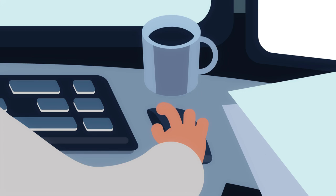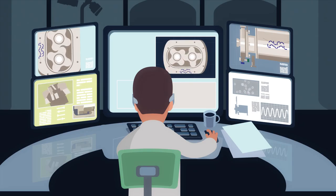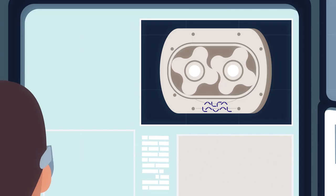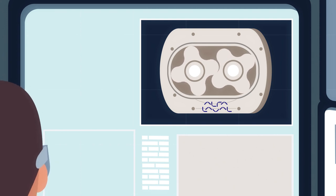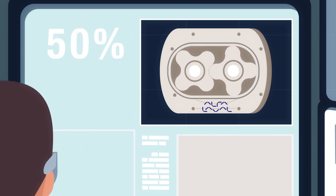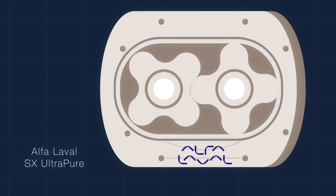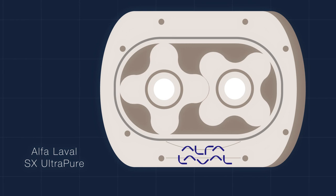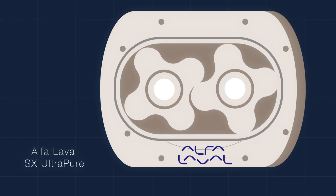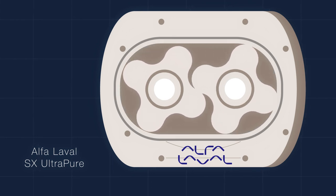Our positive displacement pumps gently transport mammalian cells between process steps, reducing cell destruction by up to 50%. The Alfa Laval SX Ultrapure Rotary Lobe Pump, with its multi-lobe rotors, provides low shear characteristics for sensitive products.